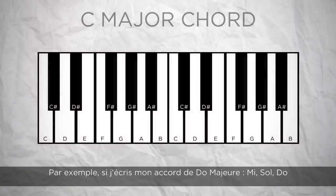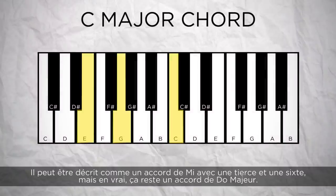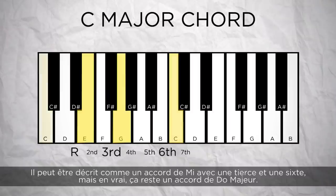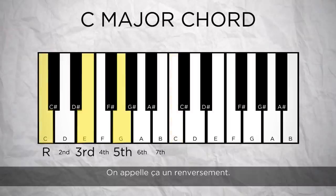For example, if I write my C major chord as E, G, C, it can be described as an E chord with a third and a sixth. But in fact, it is still a C major chord. That's what we call an inversion.